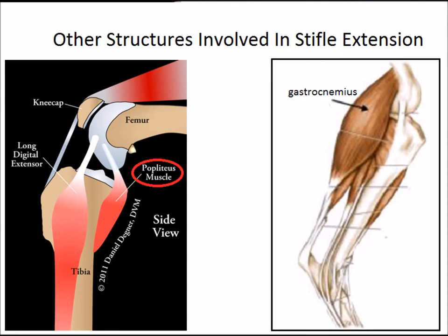With muscle structure generally determined by the degree of force required for a task, the hamstring, like the quadriceps, are relatively long muscles with a large cross-sectional area, enhancing their exertion force and shortening capacity.